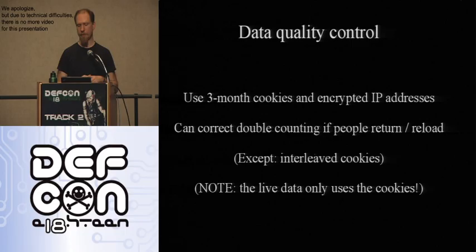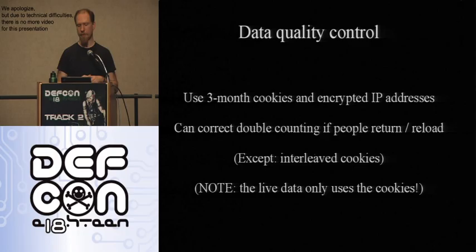For data handling, we set a three-month persistent cookie and stored an encrypted IP address with a key we threw away, primarily to avoid counting you twice. If you came back, we wanted to know whether you were the same person with the same fingerprint or a different person with the same fingerprint. One exception: if we saw cookie A, then cookie B, then cookie A again from the same IP, we treated that as potentially multiple computers behind a NAT firewall with the same fingerprint — perhaps a corporate network where a sysadmin clones the same software onto all machines, giving those users some protection.